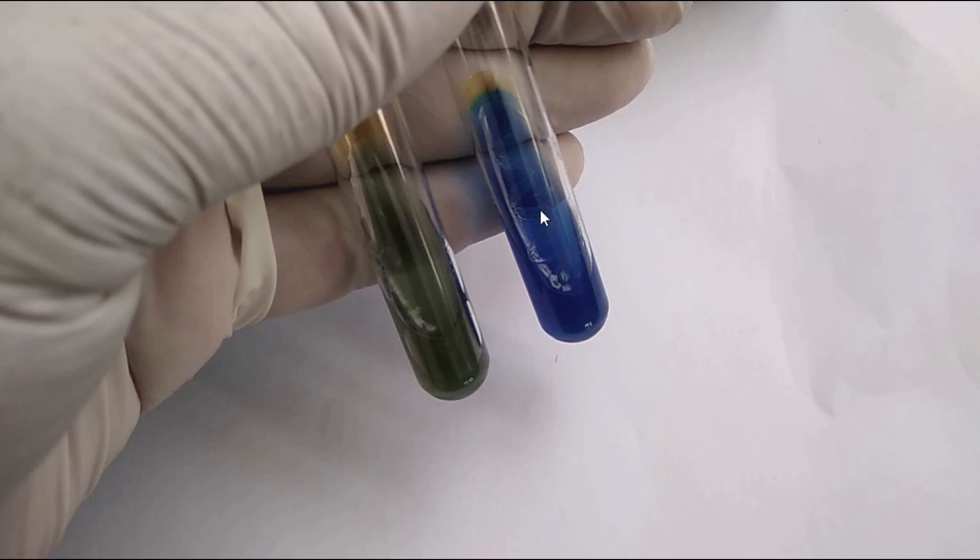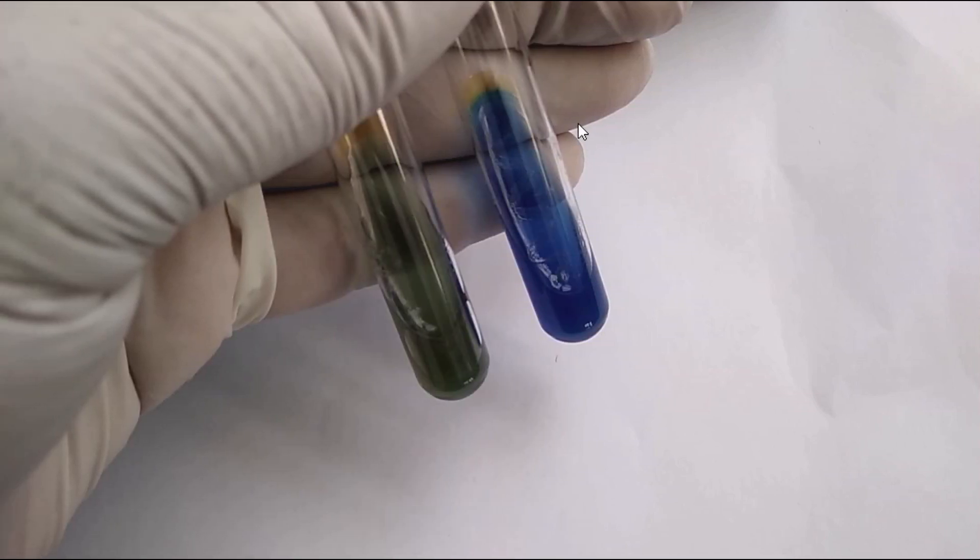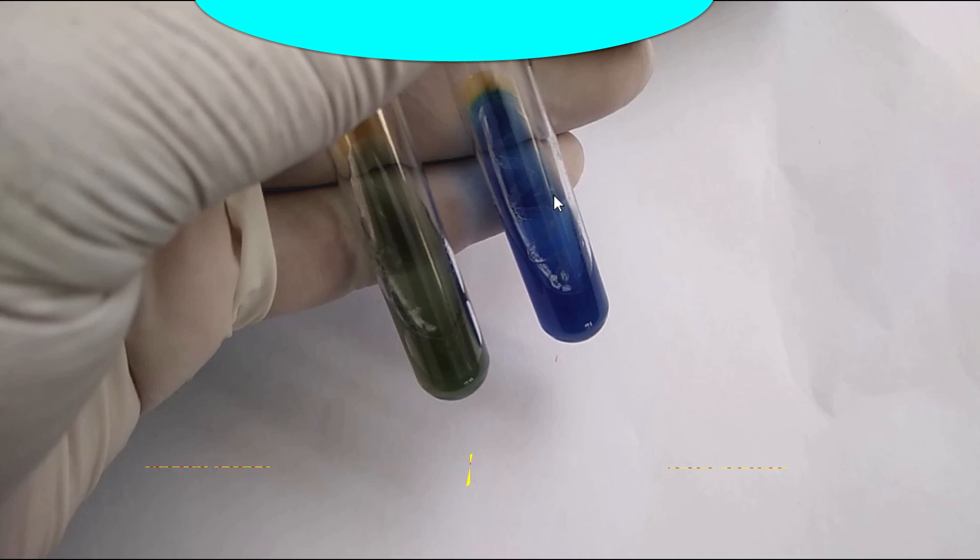To know the exact mechanism: when bacteria metabolize citrate, the ammonium salts are broken down to ammonia, which increases alkalinity. The shift in pH turns the bromothymol blue indicator in the medium from green to blue above pH 7.6. Very simple, isn't it?